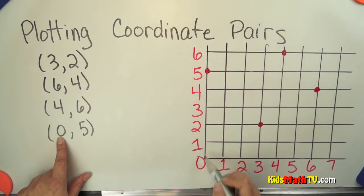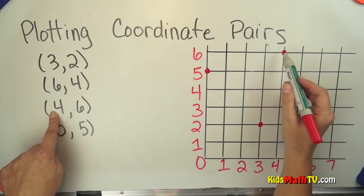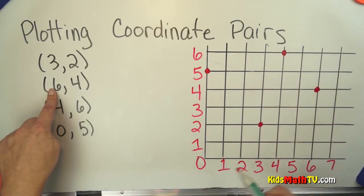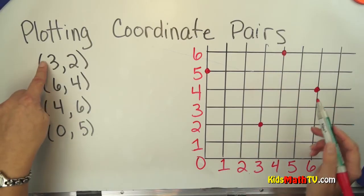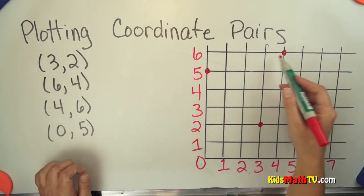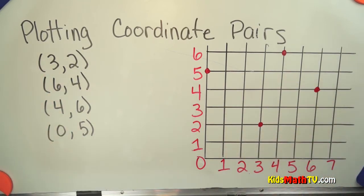So zero, five — four, six — six, four — and three, two. Those are all different plots, different points on this coordinate grid. That's the end of our lesson on plotting coordinate pairs.